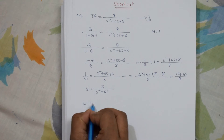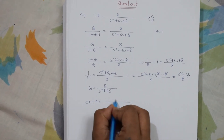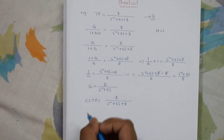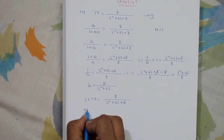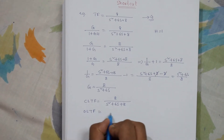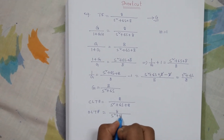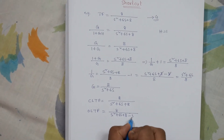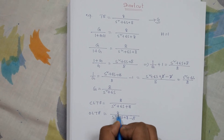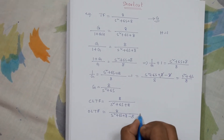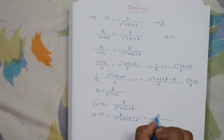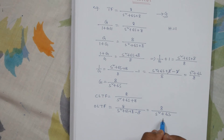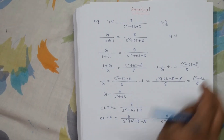We have closed loop transfer function as 8 by s squared plus 6s plus 8. If we want to convert it into open loop transfer function, we just need to subtract whatever is in the numerator from the denominator. The result we get is the open loop transfer function.